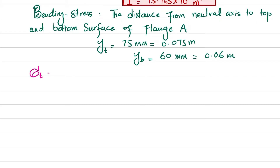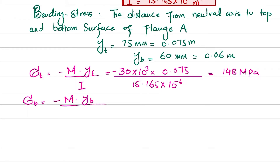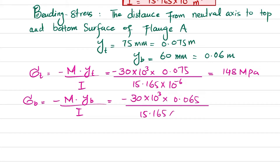The bending stress at the top is: sigma = −M × y_t / I = −(30 × 10³ × 0.075) / (15.165 × 10⁻⁶) = −148 MPa. The bending stress at the bottom of flange A is: sigma = −M × y_b / I = −(30 × 10³ × 0.065) / (15.165 × 10⁻⁶) = −119 MPa.